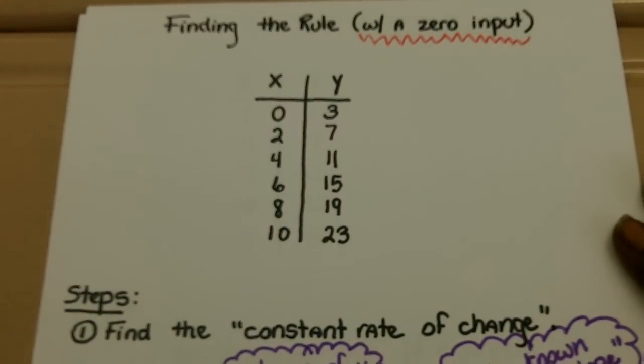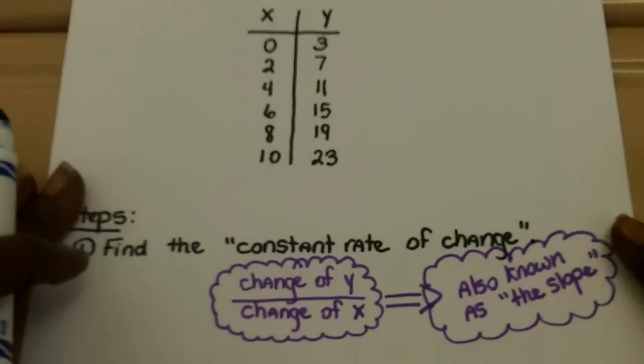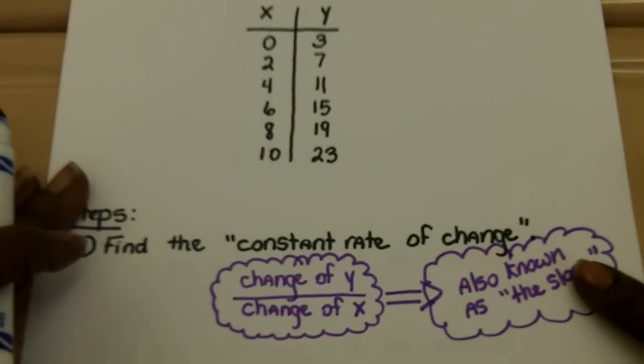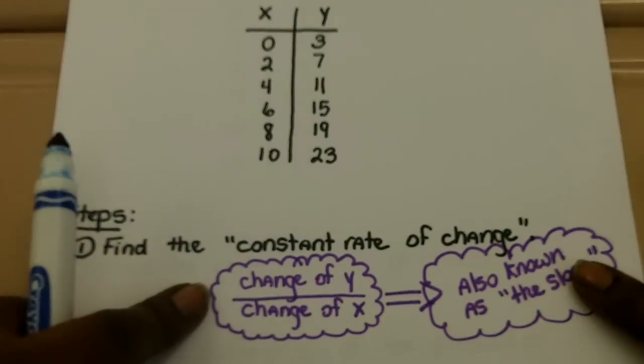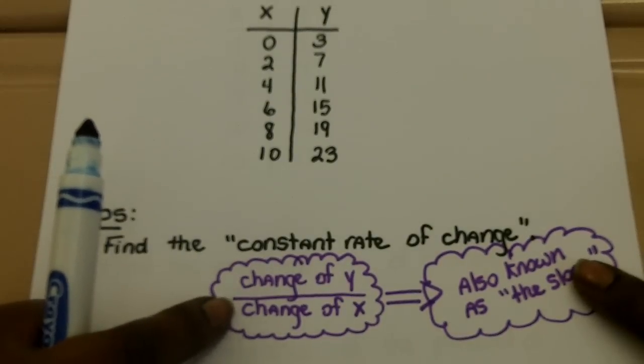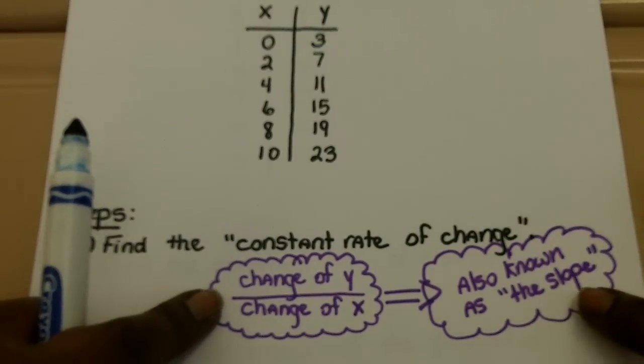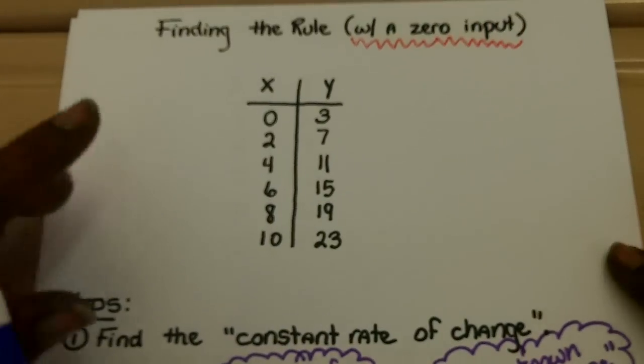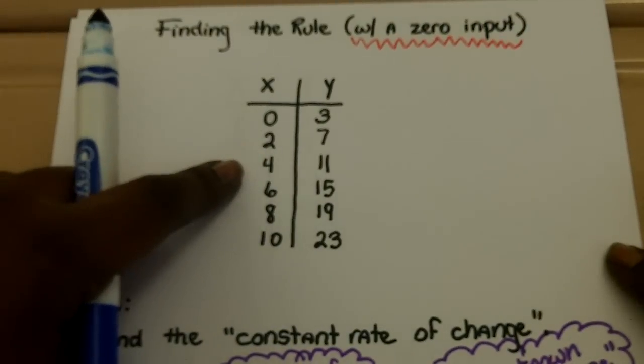First step is to find what is known as the constant rate of change. Basically, there is a formula for the constant rate of change. What you're going to look for is first the change of the y's, that's the change of the outputs, and you're going to divide that by the change of the x's, in other words, the change of the input. This is also known as the slope when we're graphing. But first, let's get to finding the constant rate of change.